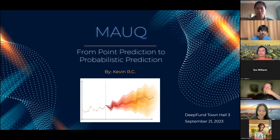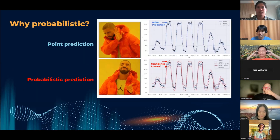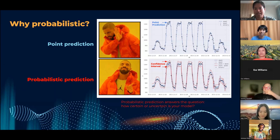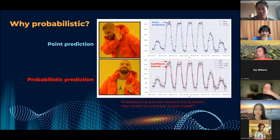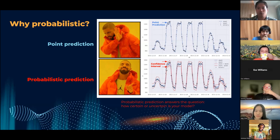So first, why probabilistic prediction? Well, ultimately having a probabilistic prediction answers the question of how certain — how sure — is your underlying model. For example, you have a point prediction that tries to predict the actual value, but having a probabilistic prediction can give you an interval, or the upper and lower boundaries of your model prediction.